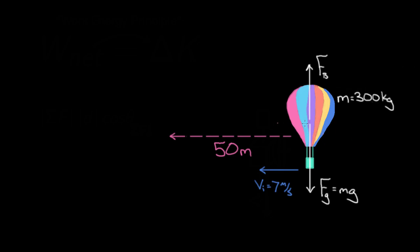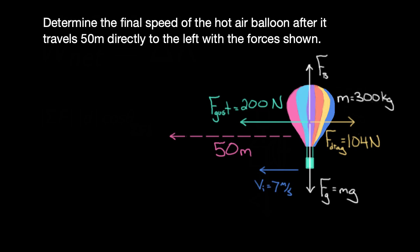You only consider the forces in the direction of motion. There's a wind gust helping to the left of 200 newtons, but this is a big bulky balloon, not that aerodynamic. There's a drag force from air resistance of 104 newtons to the right. We want to determine the final speed of the hot air balloon after it travels 50 meters directly to the left with the forces shown.